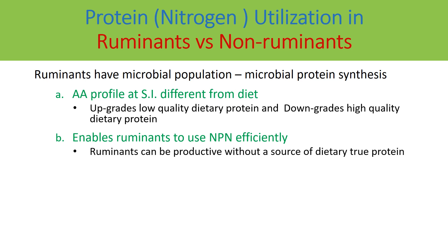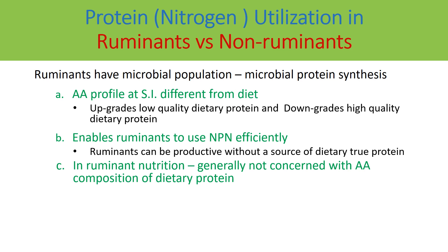This microbial population also enables ruminants to use NPN compounds efficiently. Ammonia from urea or ammonium salts is captured and converted into microbial protein. Ruminants can therefore be productive without a source of dietary true protein, whereas true dietary protein is mandatory for monogastric species, which cannot utilize ammonia or synthesize microbial protein to fulfill their protein and amino acid requirements.